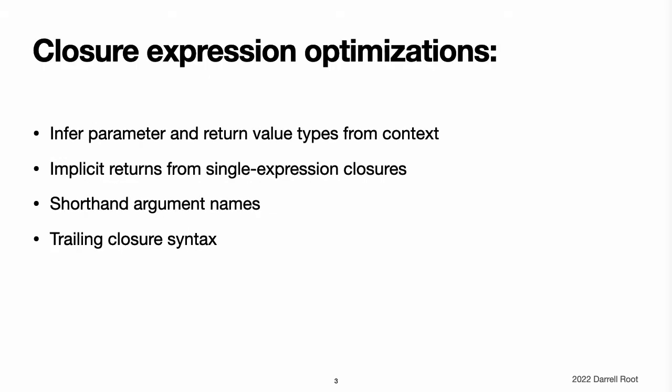Swift's closure expressions have a clean, clear style with optimizations that encourage brief, clutter-free syntax in common scenarios. These optimizations include inferring parameter and return value types from context, implicit returns from single-expression closures, shorthand argument names, and trailing closure syntax.